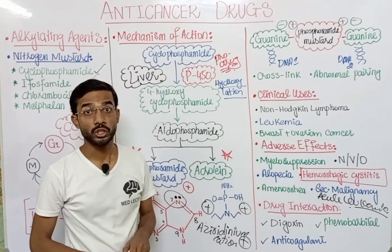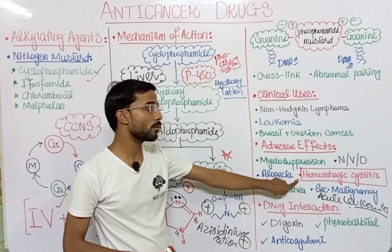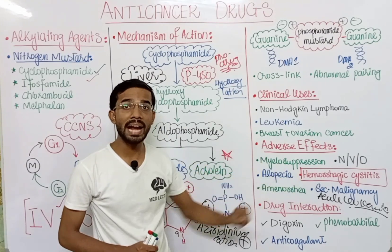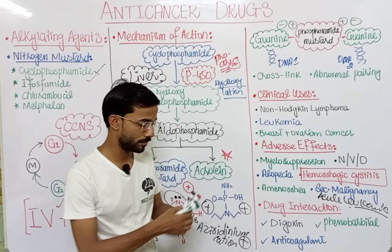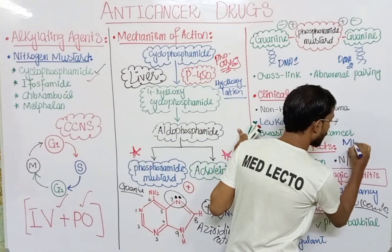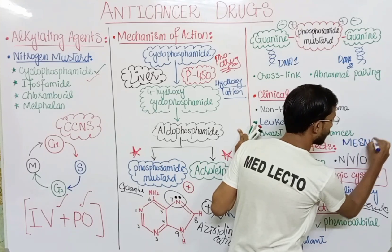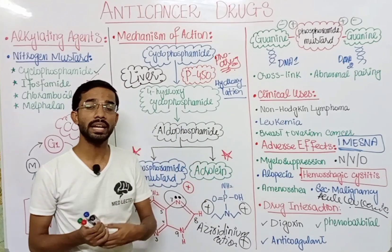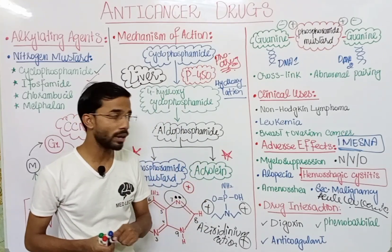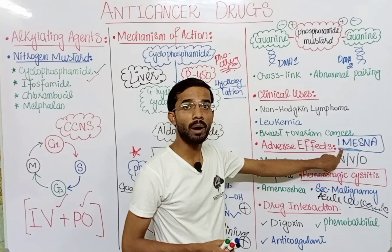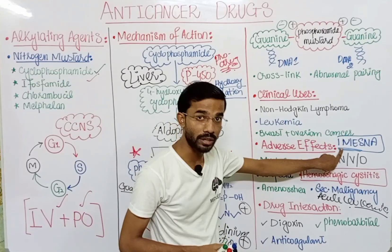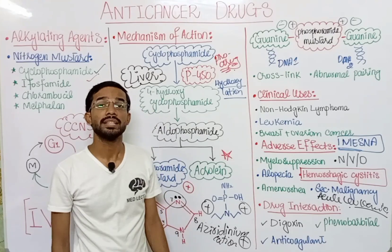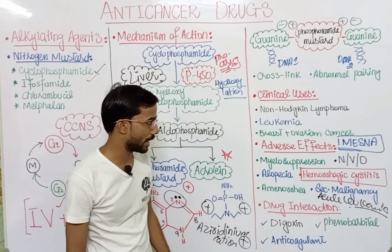Hemorrhagic cystitis can be prevented by drinking a large amount of water and by taking mesna (sodium 2-mercaptoethane sulfonate). These are the two most important preventions from hemorrhagic cystitis. Mesna reduces the toxicity of cyclophosphamide and ifosfamide as well.